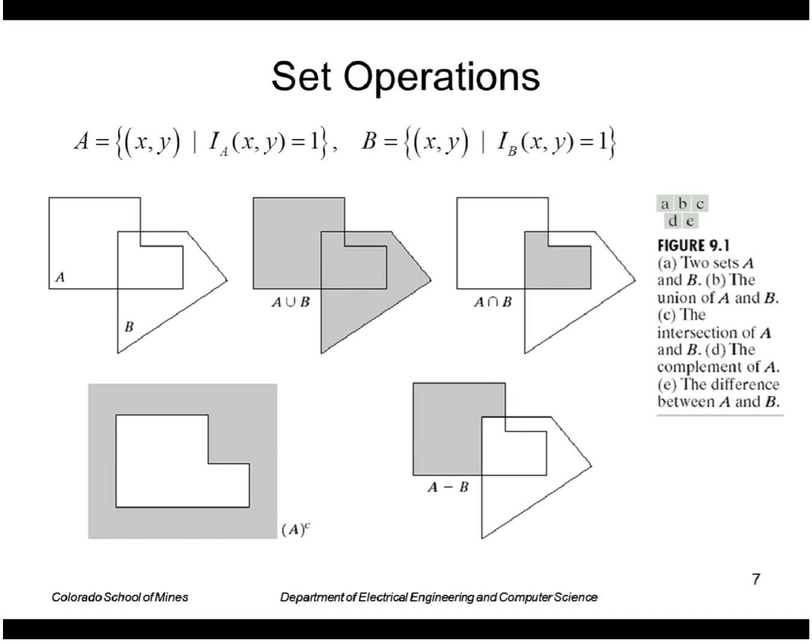Pictorially, if I draw these points in a two-dimensional region, let's say this is the set A, all the x,y points in this region, here's a set B. The union of A and B is shown here, the intersection is this region here. The complement of A is all the gray area outside A, and the set difference of A minus B is this region here, all the elements of A that are not also in B.